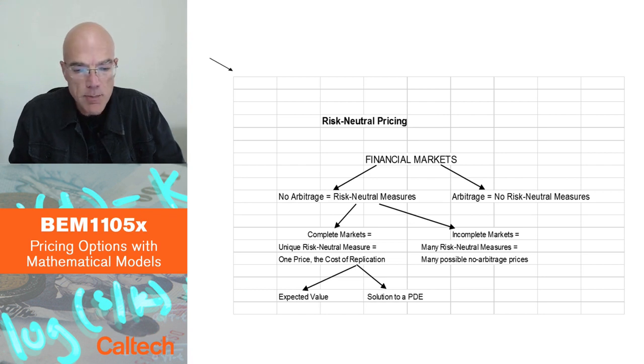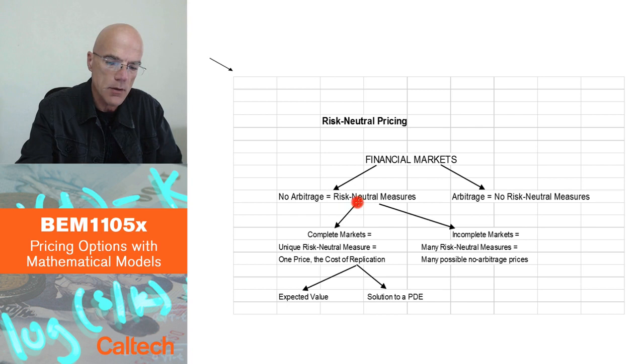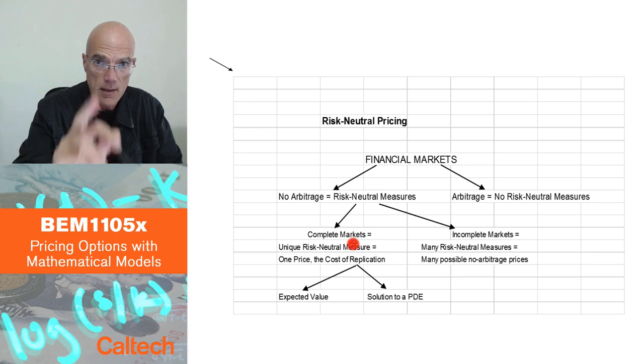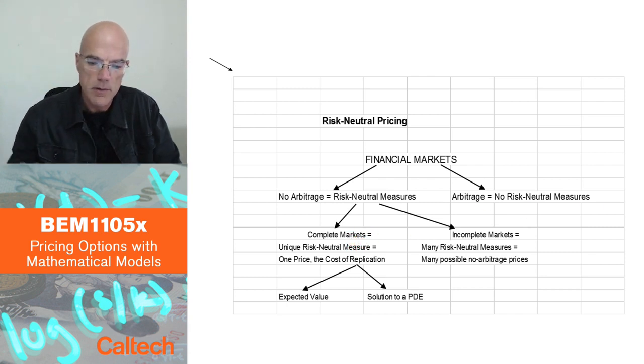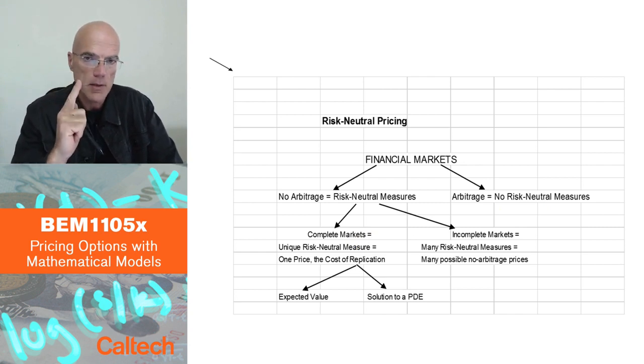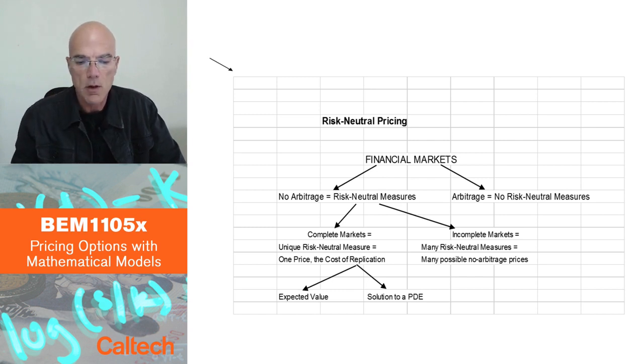And then we can split those models which have no arbitrage, and this is our second theorem, into complete markets and incomplete markets. I will define more precisely what those are, but quickly: complete markets are those in which you can replicate any random payoff. There, no arbitrage and completeness means there is exactly one risk-neutral probability, exactly one risk-neutral measure, and therefore exactly one price for every possible derivative, option, or asset, equal to the cost of replication.